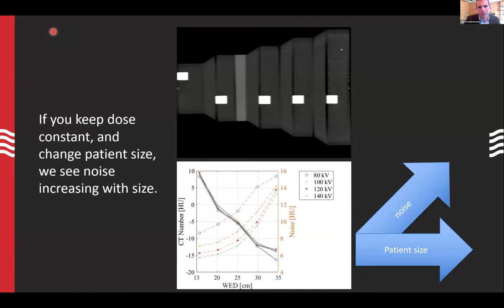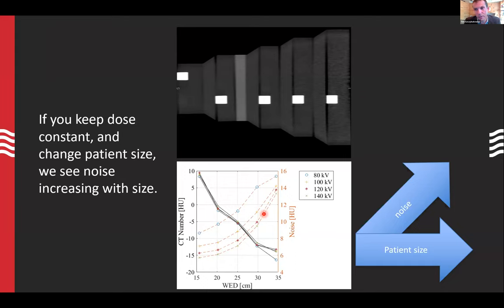If we keep the dose fixed and look at noise varying across different patient sizes — shown here in the Mercury Phantom, which changes size and resembles the Mercury spaceship — we can see that noise is going up as the water equivalent diameter increases. We can see this clinically: if you've got a cardiac protocol that uses the same MA every time, all the big patients' images are really noisy. The noise more than doubles just because of patient size, going from around 6 HU per unit up to around 15 HU per unit.